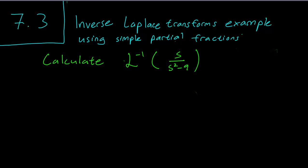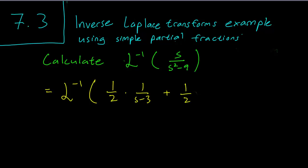Hello class. This is section 7.3 and we are going to work through an example of an inverse Laplace transform calculation that uses partial fractions. So we are asked to calculate this inverse Laplace transform, and the first step is that using partial fractions we know that this is equal to the inverse Laplace transform of 1/2 times 1/(s minus 3) plus 1/2 times 1/(s plus 3).